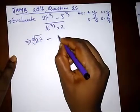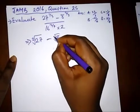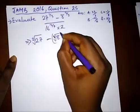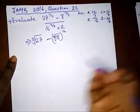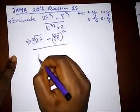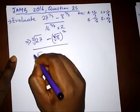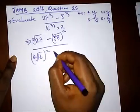Remember our law of indices: this is the cube root of 27, and the cube root of 8 all to the power of 2, and here we have the fourth root of 16 all to the power of 2 times 2.